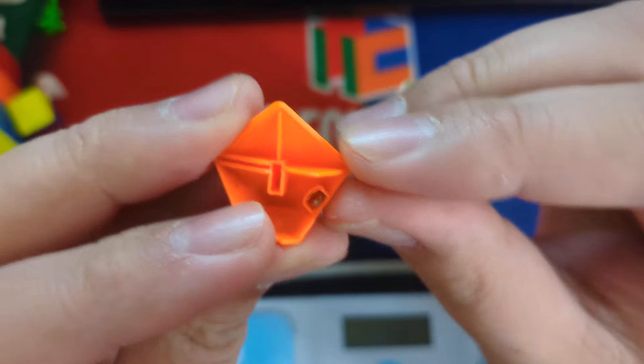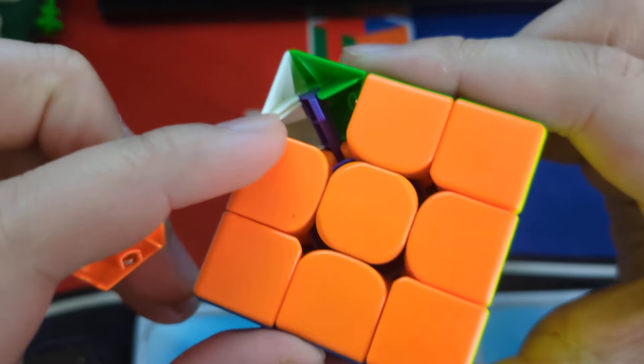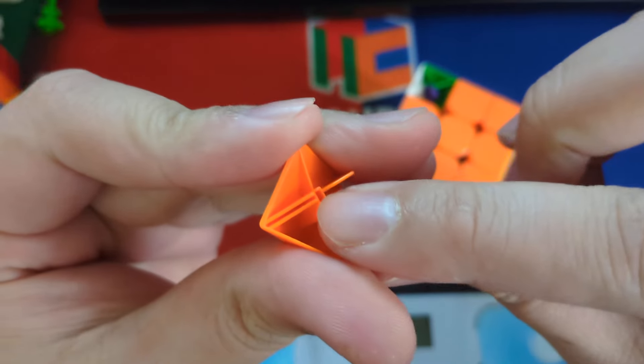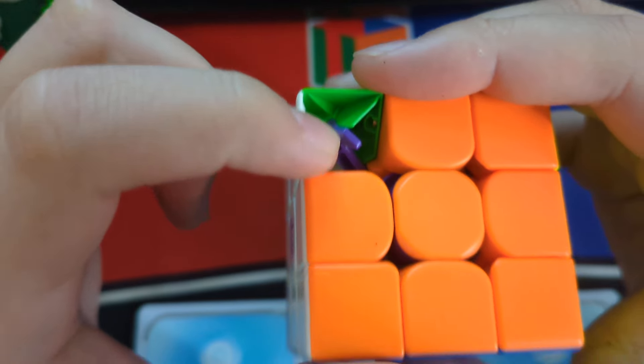So we have these little tiny flaps here. So this flap will go into the piece over here, that slot right there. And this flap over here will go into this slot over here. Now the center, it goes onto this peg right there.